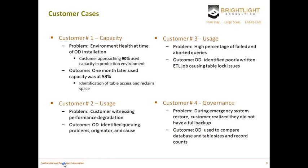The second customer was witnessing performance degradation — periodically and intermittently throughout the day, they would see slowdowns and were getting an uptick in trouble cases reported to the help desk. Using OD, we were able to identify that they had specific queuing problems coming from a very specific originator who was pumping a lot of singleton SELECT statements into the system, unknowingly having an adverse impact on the rest of the user community. With this information, the customer was able to quickly make changes to that singleton SELECT originating program, and the performance degradation completely went away.